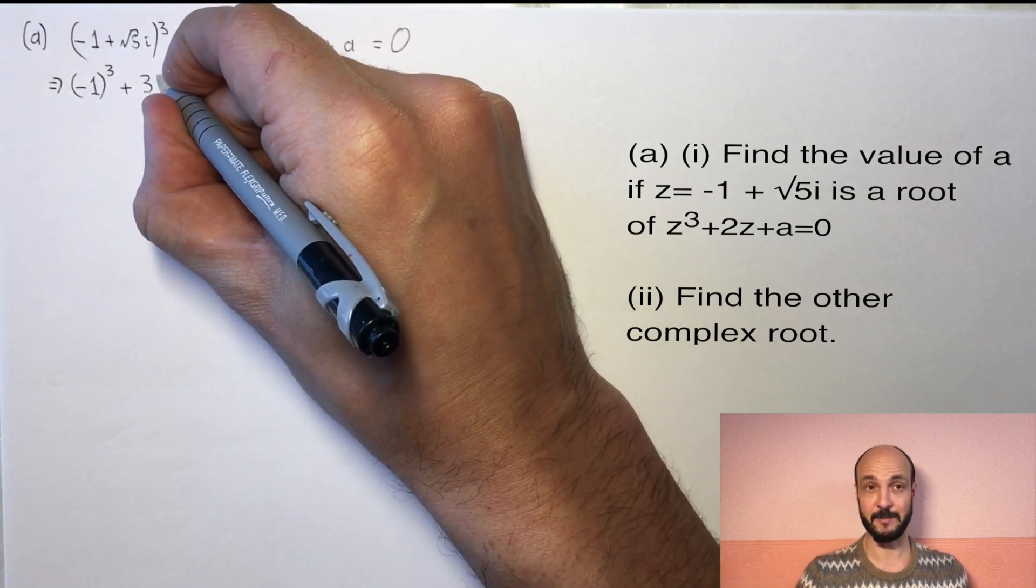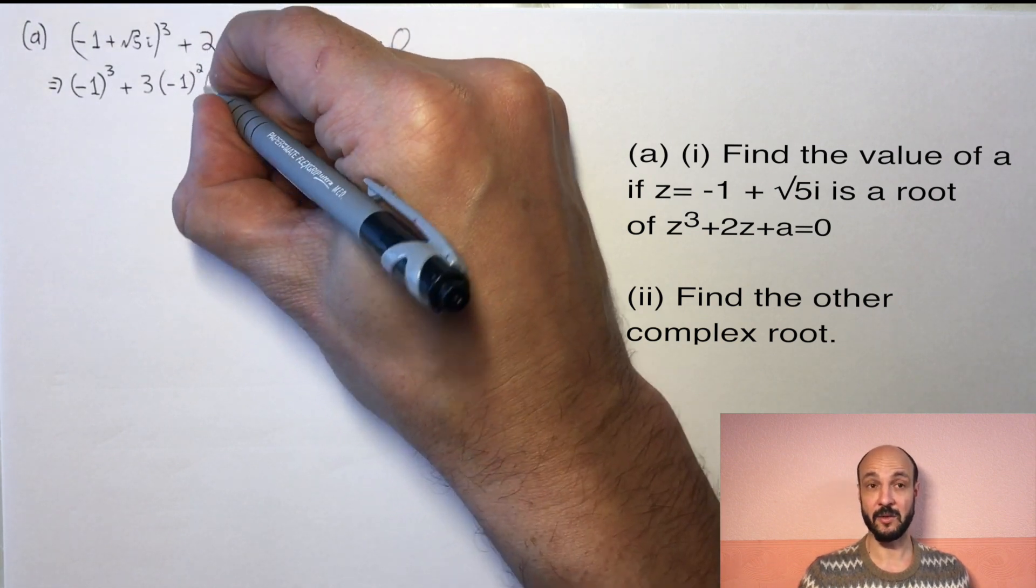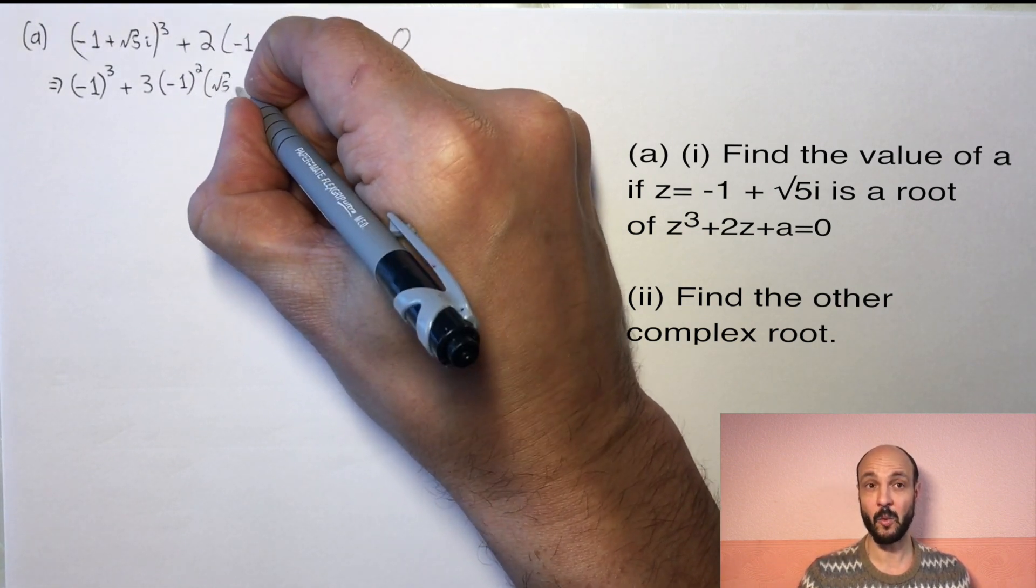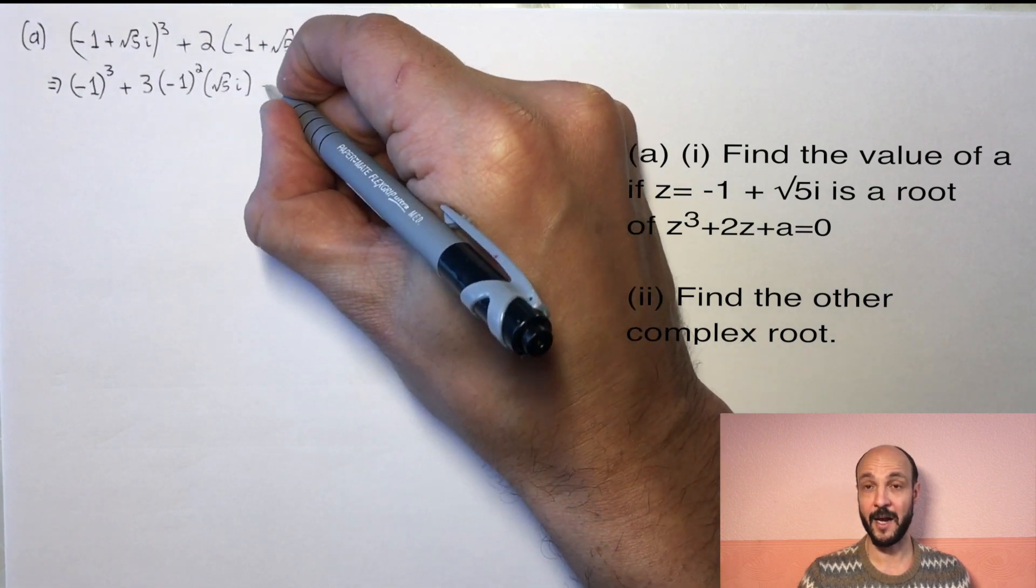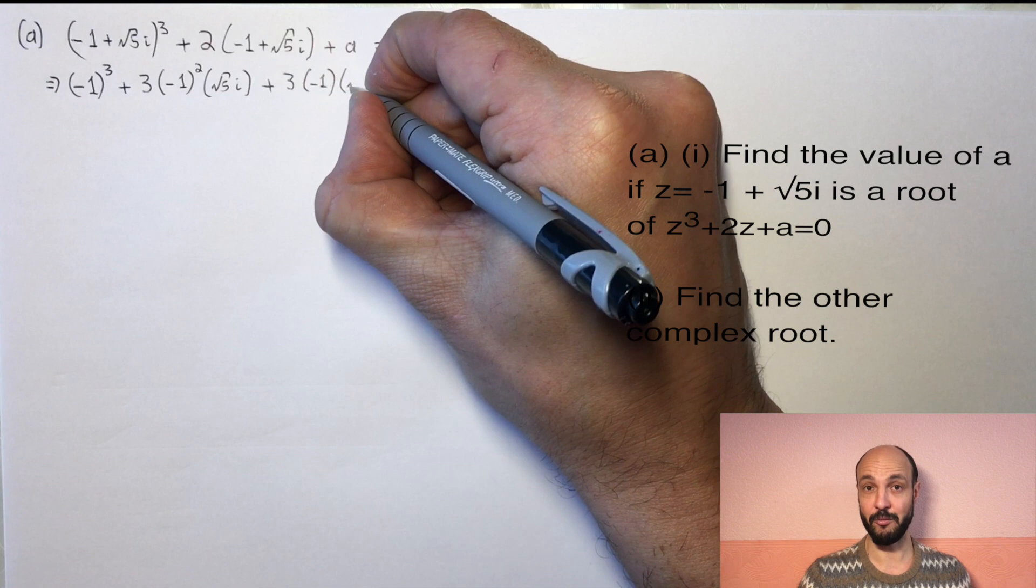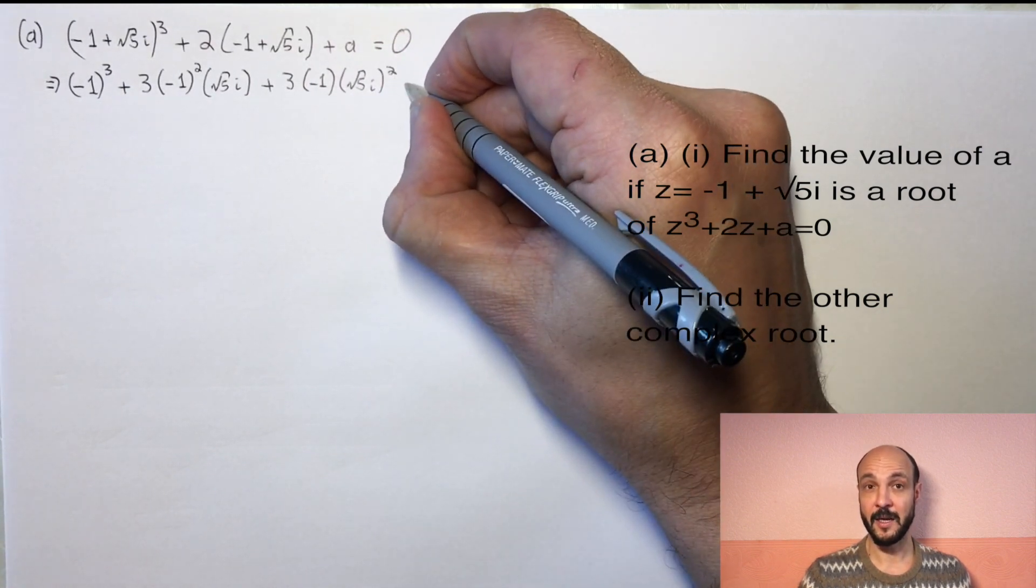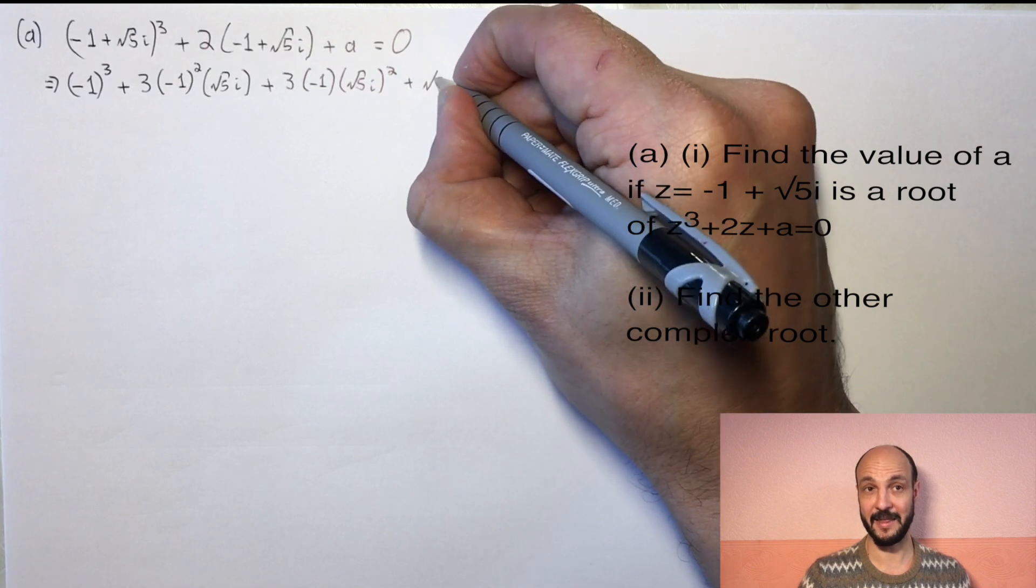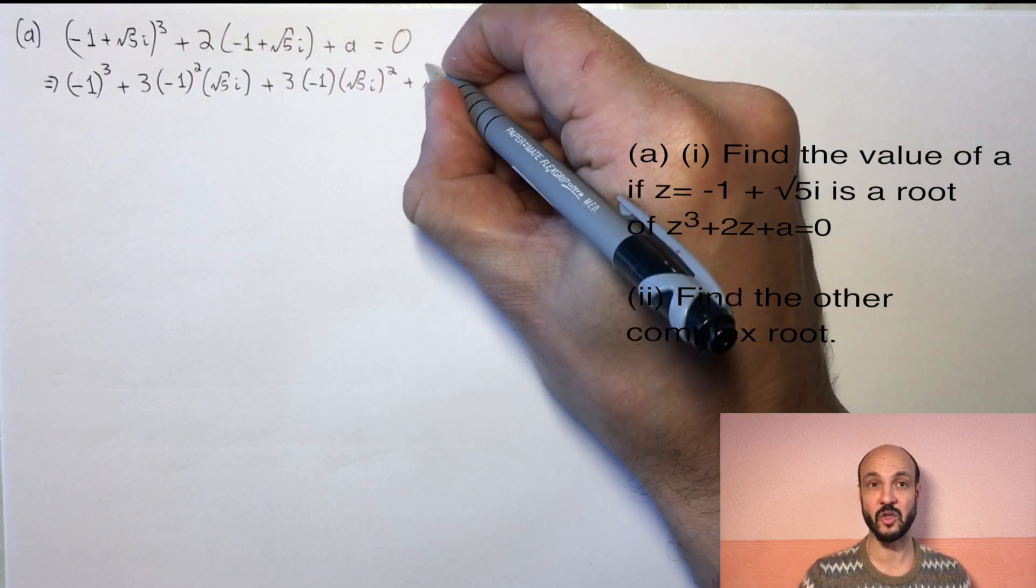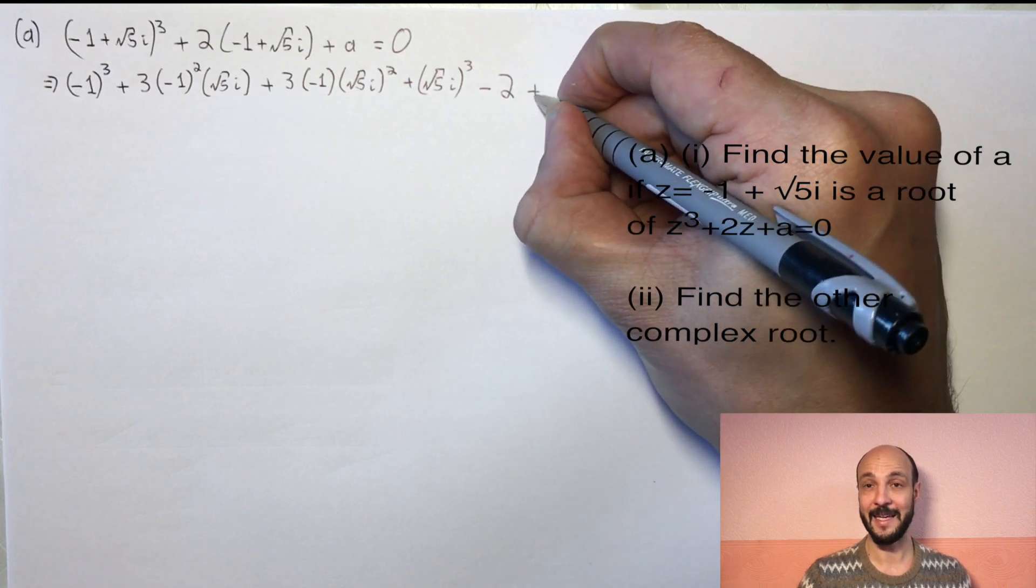So to expand this specific cubic we're going to have (-1)³ + 3(-1)²(√5i) + 3(-1)(√5i)² + (√5i)³ - 2 + 2√5i + a = 0.